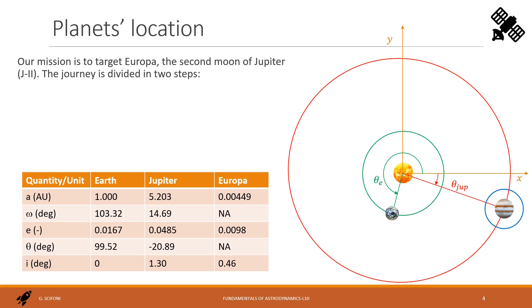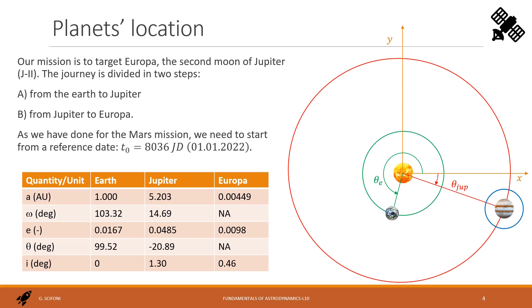Since we are targeting a moon of another planet, we need first to go to the planet or near to it — in our case to Jupiter. Therefore, we divide the mission in two steps: A, the travel from the Earth to Jupiter, and B, the travel from Jupiter to Europa. We take the first of January 2022 as the reference time. The orbital parameters of the Earth, Jupiter, and Europa are as displayed in the table. We do not consider the longitude of the ascending node, because we use a 2D model with orbits in one common plane — the ecliptic — and take inclination into account only for delta-v purposes when changing the orbit plane.